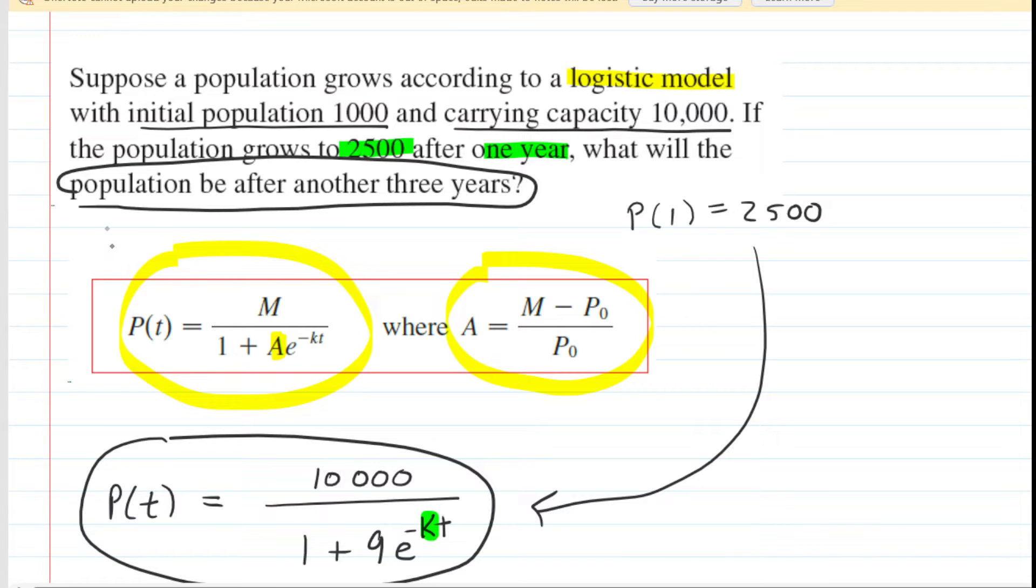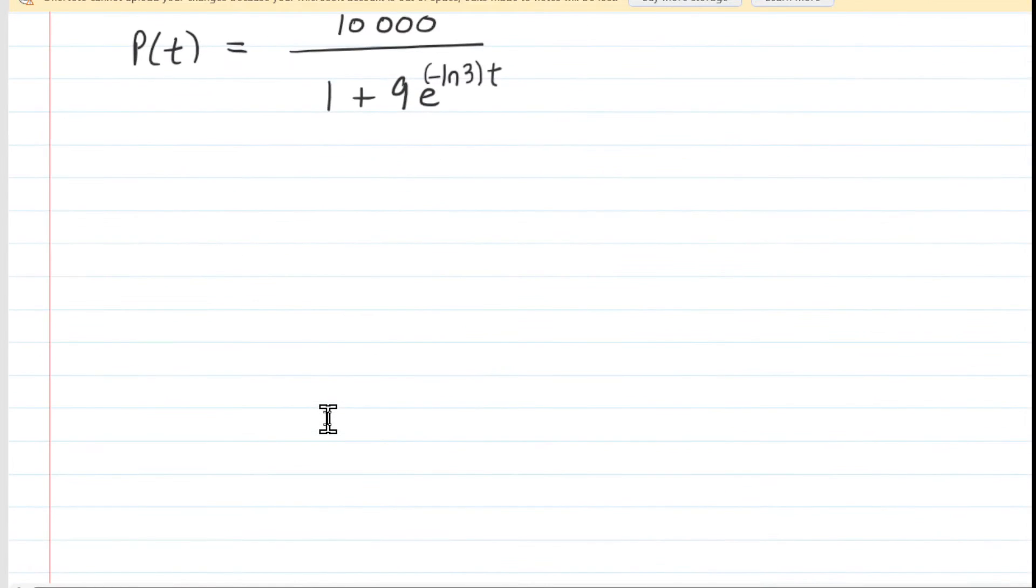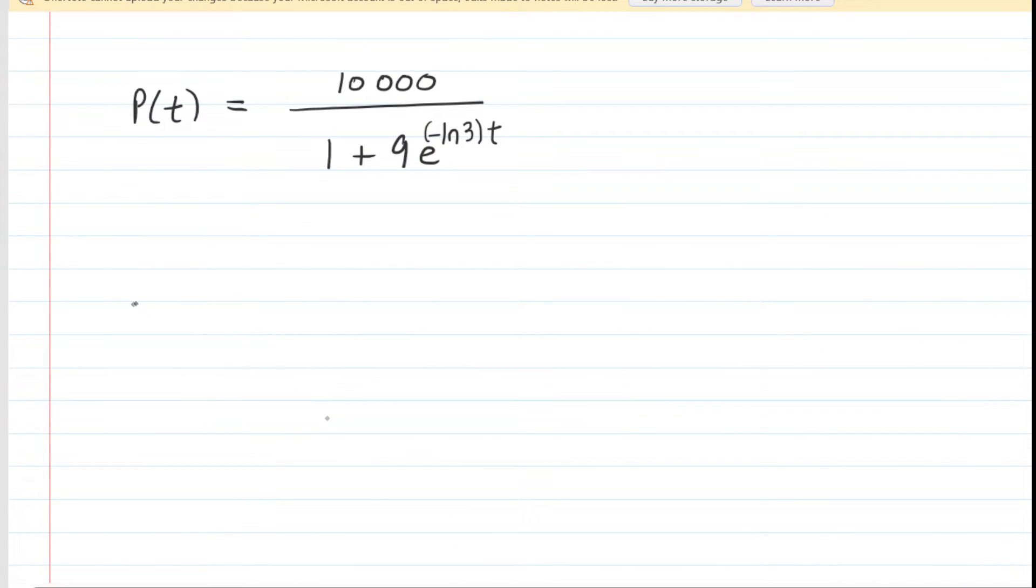Now read that carefully. It doesn't say what's the population after 3 years. It's after another 3 years. So already 1 year has passed. Another 3 years passing would bring the total time up to 4 years. So just be careful there. We do have to plug 4 in for T, which we will do right now.